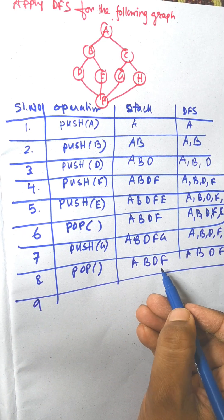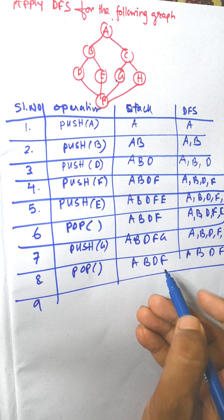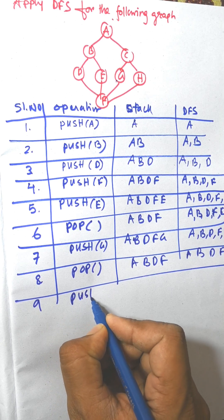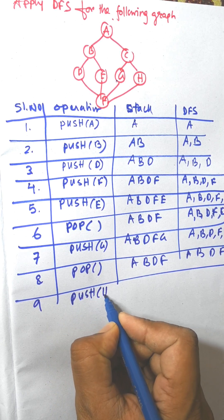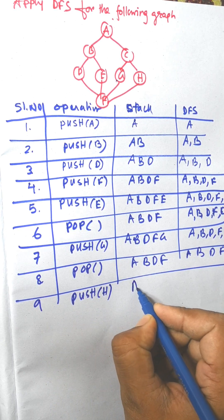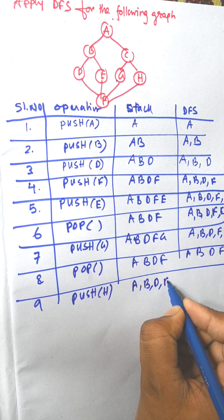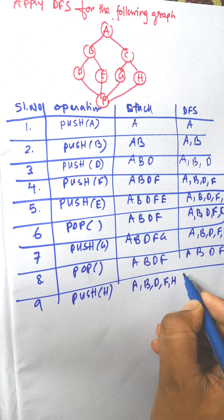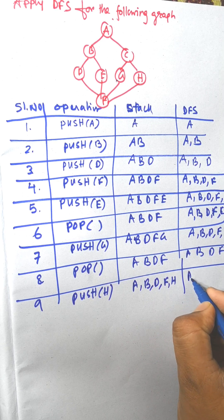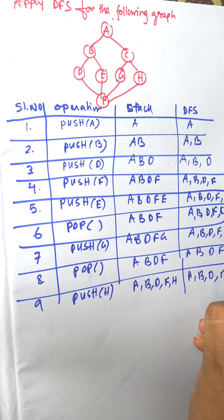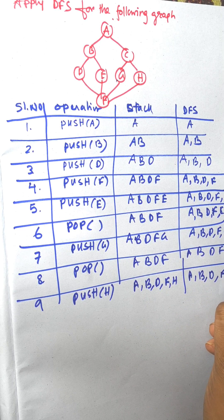Next, from F we can visit H, so push H. The stack is now A, B, D, F, H and the visited list answer is A, B, D, F, E, G, H.